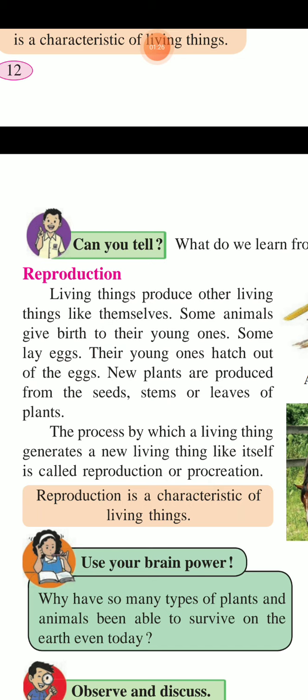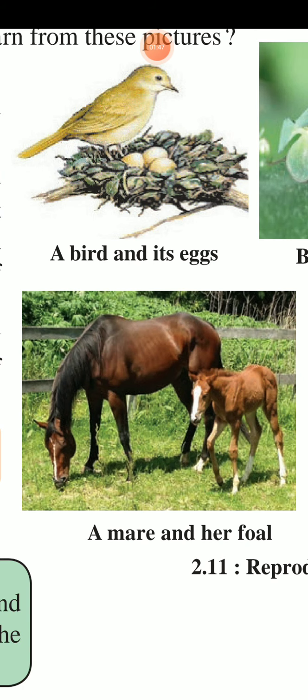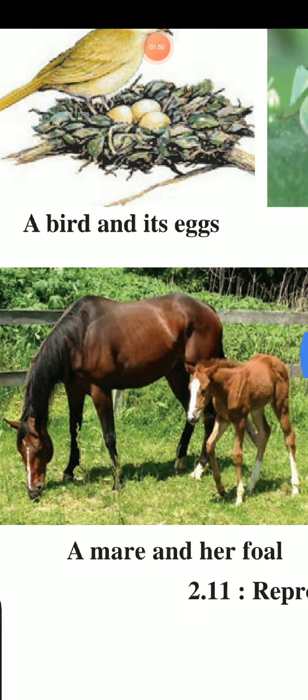The process by which a living thing generates a new living thing like itself is called Reproduction. Reproduction is a characteristic of living things.